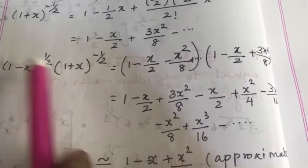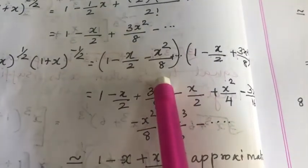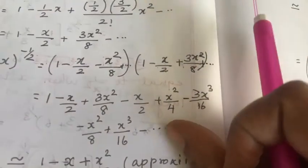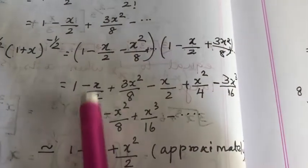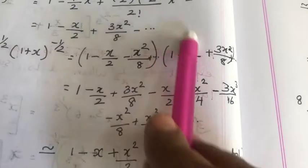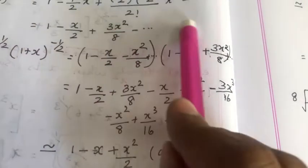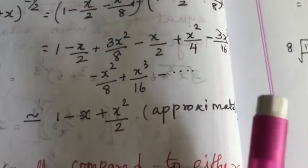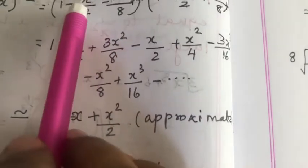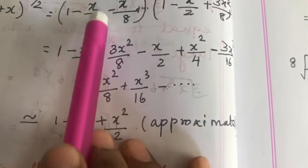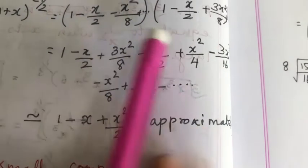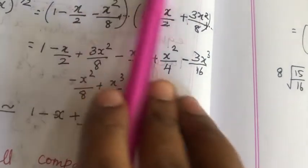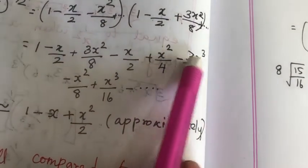Now we have to multiply the two expressions: (1 − x/2 − x²/8 + ...) times (1 − x/2 + 3x²/8 + ...). So 1·1 = 1; 1·(−x/2) = −x/2; 1·(3x²/8) = 3x²/8. Now multiplying with −x/2: (−x/2)·1 = −x/2; (−x/2)·(−x/2) = +x²/4; (−x/2)·(3x²/8) = −3x³/16.